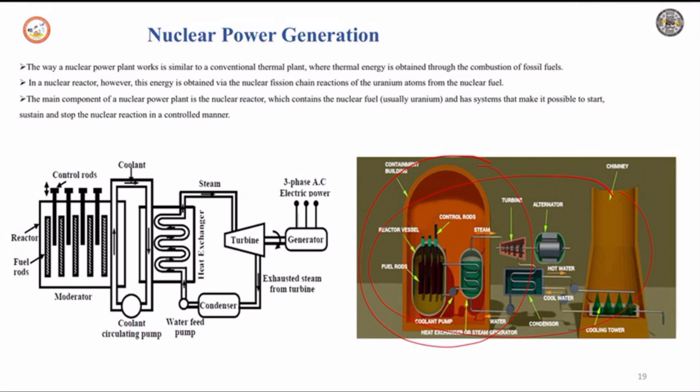The nuclear fission inside the reactor pressure vessel generates heat, which heats the water until the water evaporates, and that steam helps the turbine to rotate.